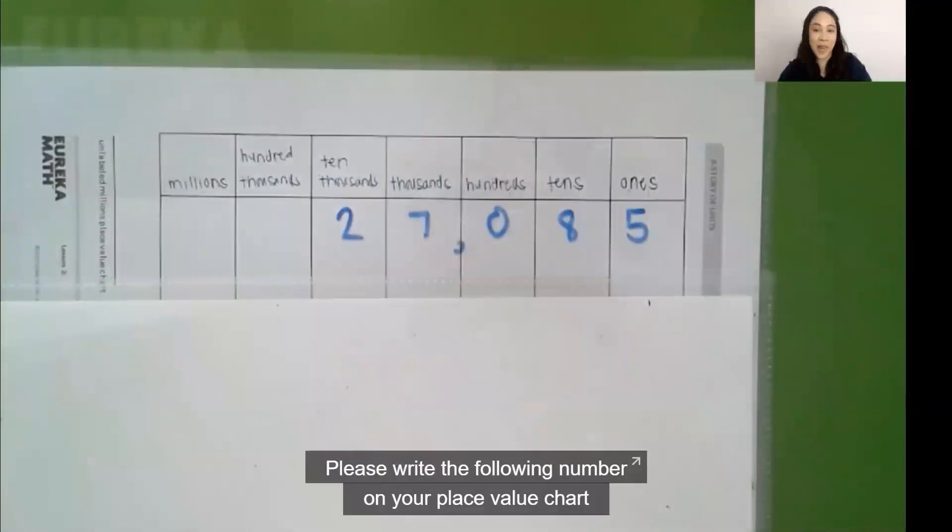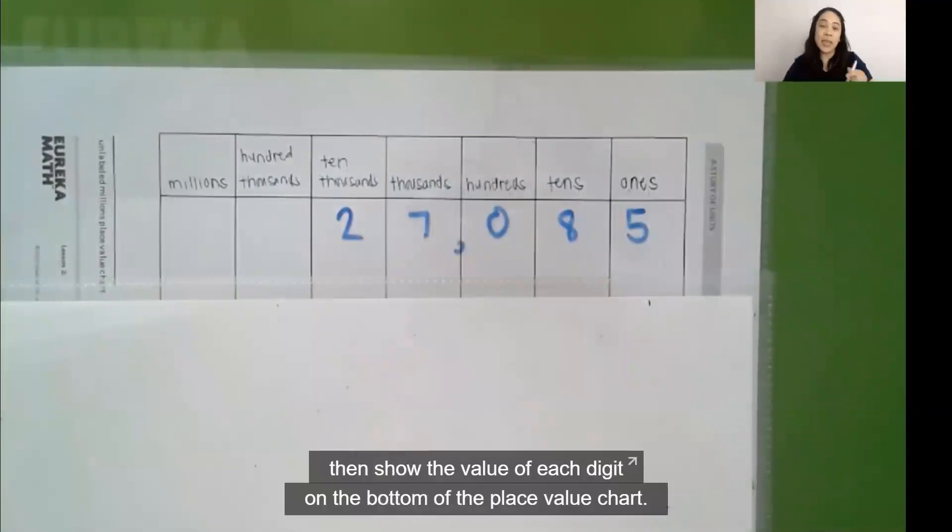Please write the following number on your place value chart. Then, show the value of each digit on the bottom of the place value chart.